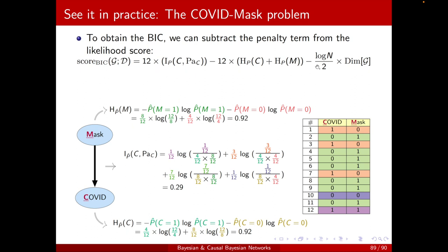We have this first term, which we can calculate as in this form. And then, we just need to add this additional term. We have 12 instances, so log of 12 divided by 2. What is dim(G), the dimension, the number of independent parameters? Well, we have mask without any parents, so there's just one. It's a binary variable. We just need one parameter.